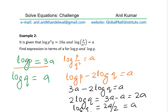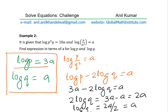So that is how we solve these two equations, and we got our answers in terms of a as required. We found that log p = 3a and log q = a. These are expressions in terms of a, which is exactly what was asked. I hope the steps are absolutely clear.